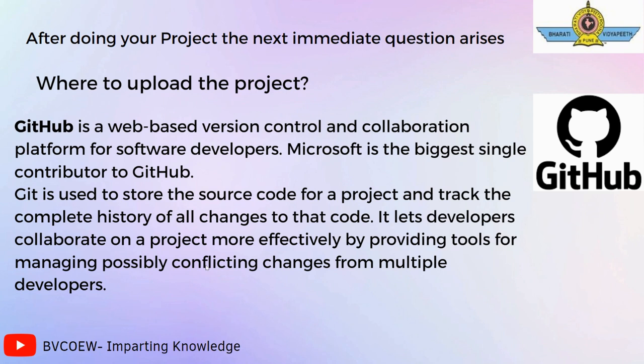After completing your project, the next question is where to upload it. This website is known as GitHub. GitHub is a web-based version control and collaboration platform for software developers. Microsoft is the biggest single contributor to GitHub. Git is used to store the source code for a project and track the complete history of all changes to that code. It lets developers collaborate on a project more effectively by providing tools for managing possibly conflicting changes from multiple developers.